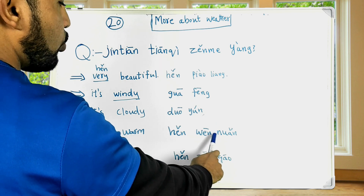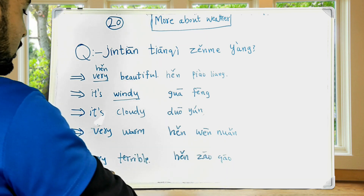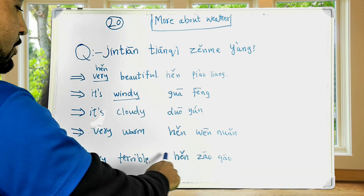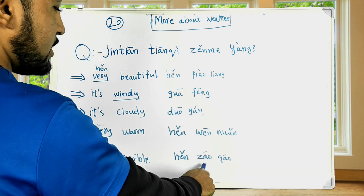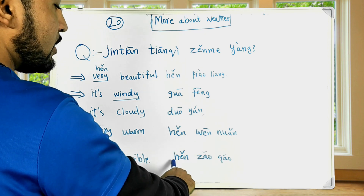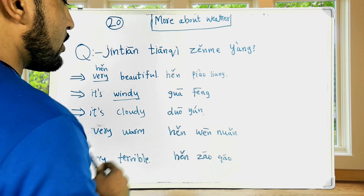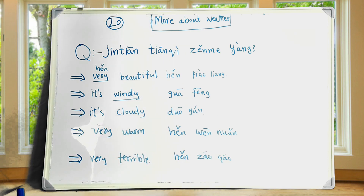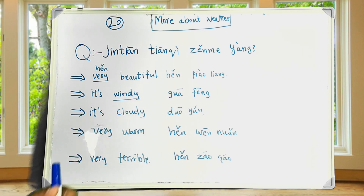How's the weather today? Very terrible — 很糟糕. So these are the five answers for this question in short form.